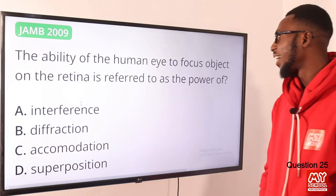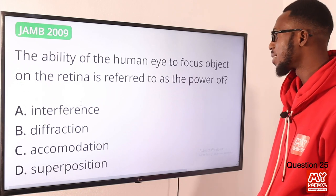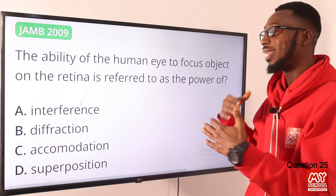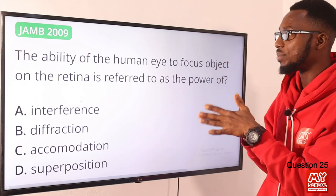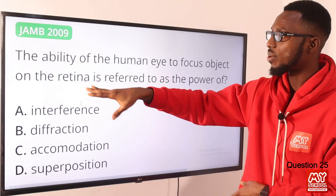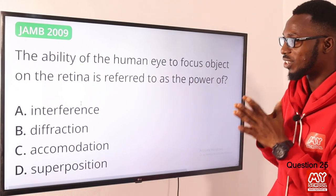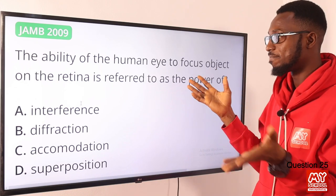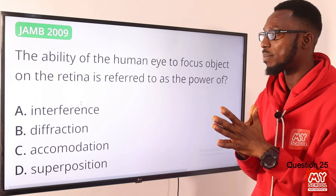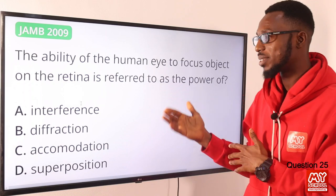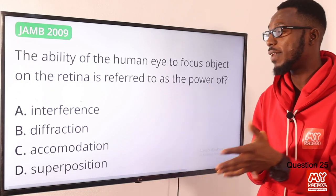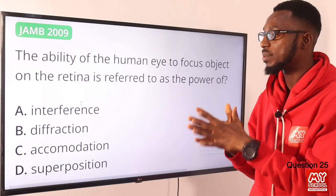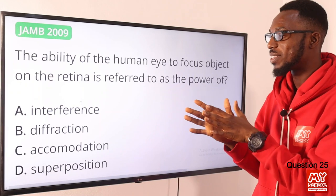Question 25: The ability of the human eye to focus objects on the retina is referred to as the power of accommodation. Whether the object is distant or close, the eye adjusts to position the image of the object on the retina. When this ability is absent, conditions like short-sightedness and long-sightedness arise. Interference, diffraction, superposition, reflection, and refraction are properties of waves. The correct option is option C for accommodation.